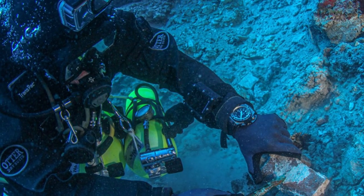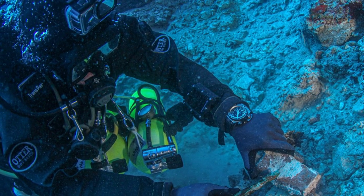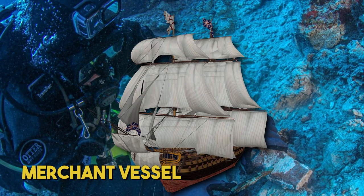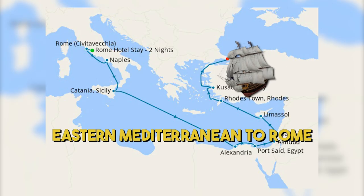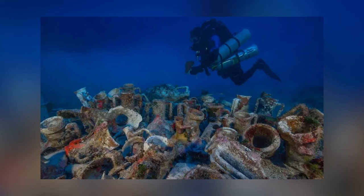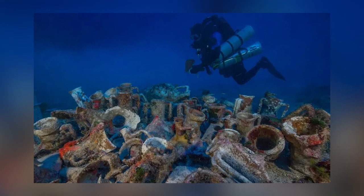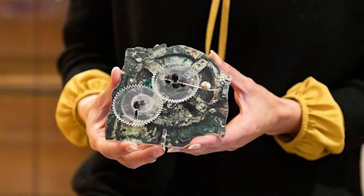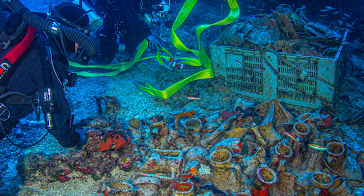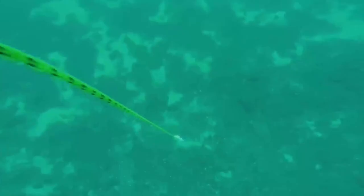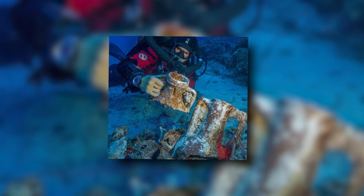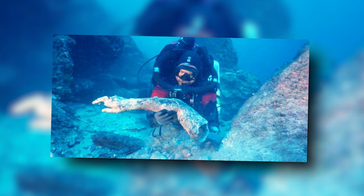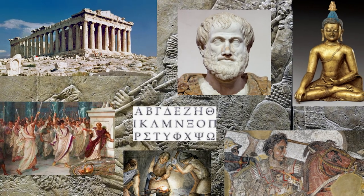Returning to the shipwreck where the mechanism was discovered, it is believed that the ship was a merchant vessel traveling from the eastern Mediterranean to Rome. The presence of the Antikythera mechanism aboard the ship suggests that it was a valuable, and possibly even a prized possession. The shipwreck has continued to provide archaeologists with a wealth of information about the ancient world. Recent underwater excavations have revealed more artifacts, including bronze statues, glassware, and even human remains, shedding light on the lives and commerce of that era.